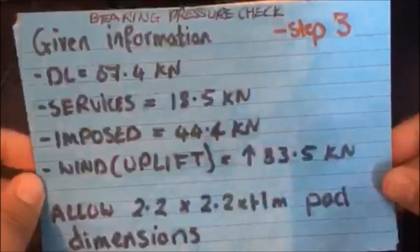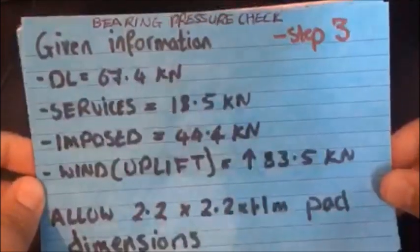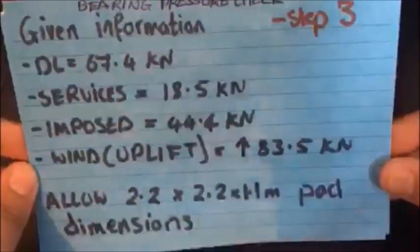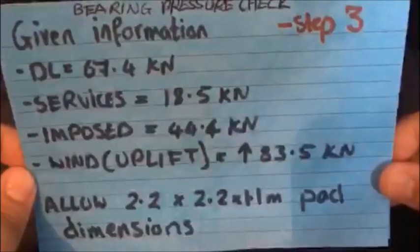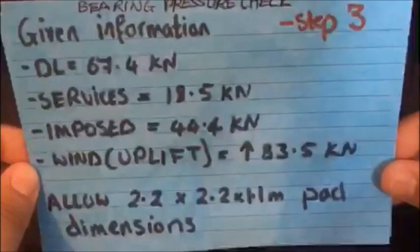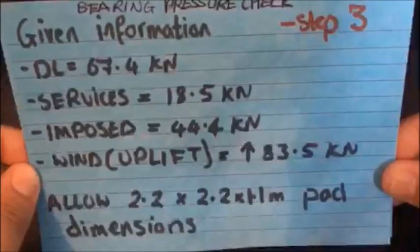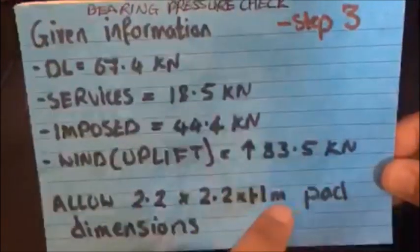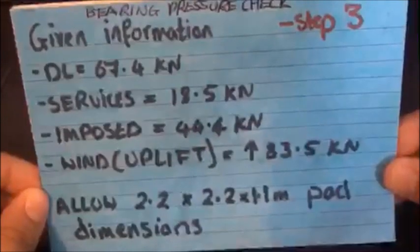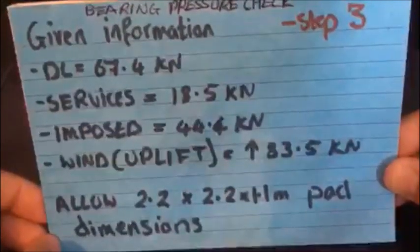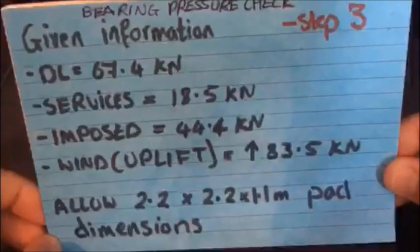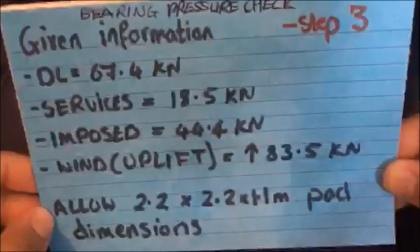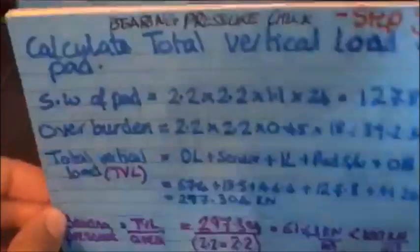So the dead load is 67.4 kN, service load 18.5 kN, imposed load 44.4 kN, and wind uplift is 83.5 kN. Wind uplift is as it describes, it's the wind acting on the structure pulling it up. And so I've said for our pad design, let's allow for 2 by 2 by 1.1 meter depth pad foundations. The general rule with pad foundations is whatever the length and width of the pad is that you've specified, the depth is always half of it. So for example, if you decided to do a pad foundation that's 3 by 3 meters, the depth would be 1.5 meters.